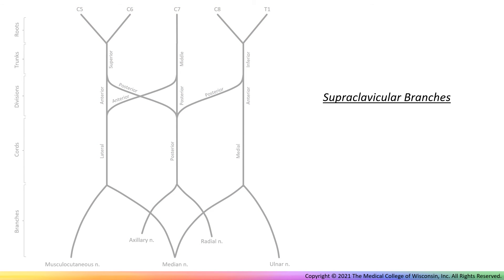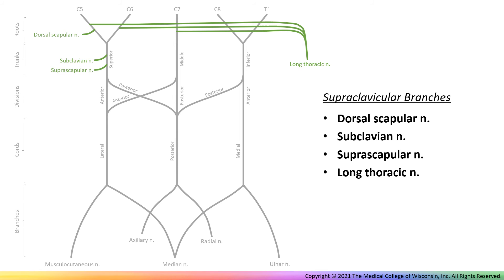Now we will add some smaller branches of the brachial plexus. First, draw in the supraclavicular branches, meaning they can be found superior to the clavicle. Add and label the dorsal scapular nerve, coming off of C5. Then the subclavian and suprascapular nerves, coming off the superior trunk. And then finally, add the long thoracic nerve, which branches from C5, C6, and C7, and extends down the thorax to the serratus anterior muscle.